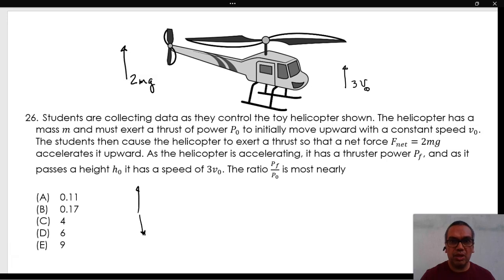According to the initial description, the helicopter is moving up at constant speed v0, so the upward force must be equal to the helicopter's weight mg. Therefore, the power p0 being exerted at that time must be equal to f times v0, or mg v0.